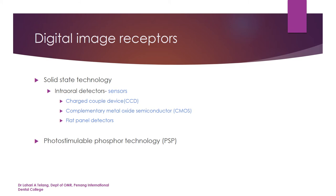Various receptors are available in the market for use as digital radiology dental sensors. They are broadly divided into solid state technology and photo-stimulable phosphor technology, also called PSP. Solid state detectors or sensors can either be charged coupled devices (CCD), complementary metal oxide semiconductors (CMOS), or flat panel detectors. Among these, CCD, CMOS, and PSP are the most popular in the market.